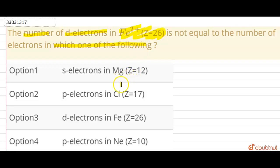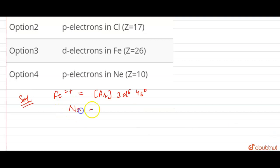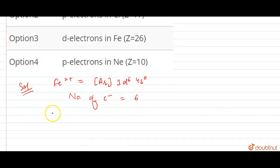The question is: the number of d electrons in Fe2+, whose atomic number Z is equal to 26, is not equal to the number of electrons in which of the following? Which electrons do not match with Fe2+? Let's start.